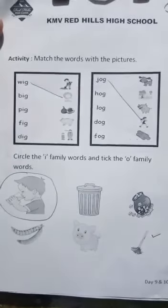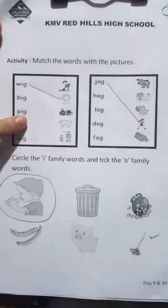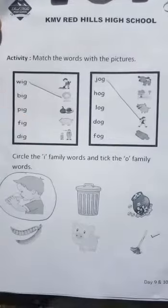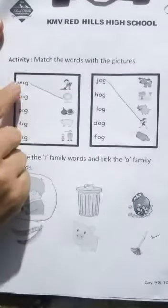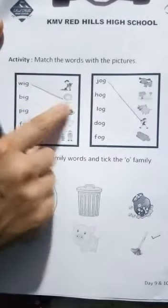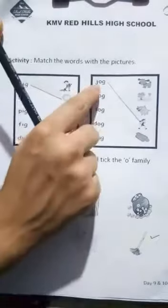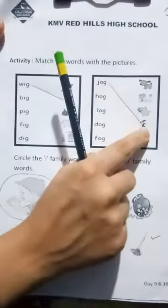Now let us do an activity. Here, match the words with the pictures. V, I, G — wig. J, O, G — jog.